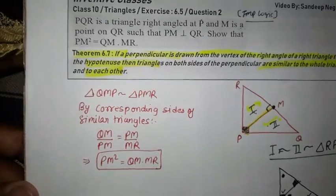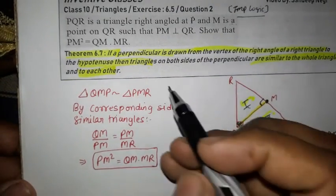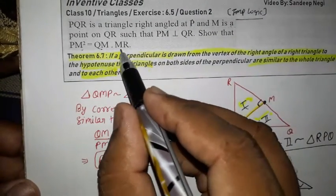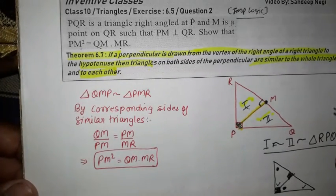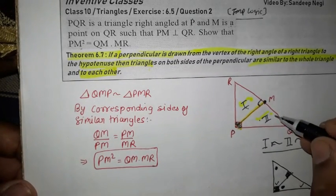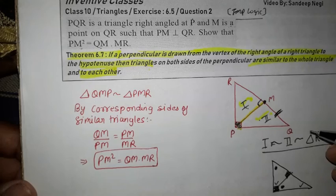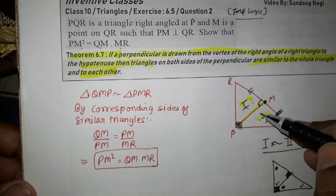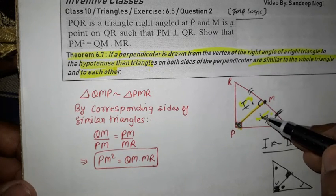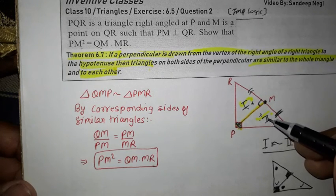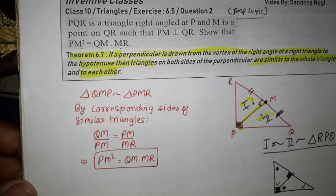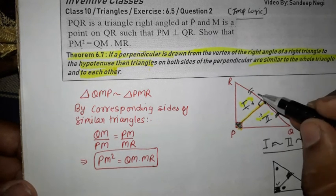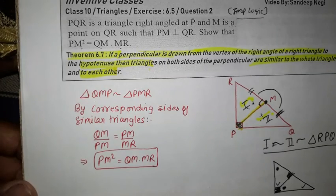Now let's go to the question. We need to show PM², QM, and MR. So we can easily see QM here, MR here. If we prove these two triangles similar, then we can use this link to multiply.